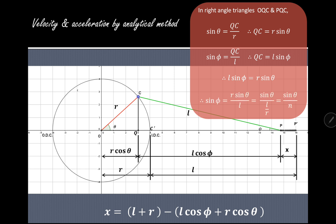Transferring L to the other side: sin φ = R sin θ / L, which can be written as sin φ = sin θ / (L/R). The ratio L/R — the length of connecting rod to crank length — is known as the obliquity ratio, denoted n. In this way we establish the relation between the crank angle θ and the angle of obliquity φ.